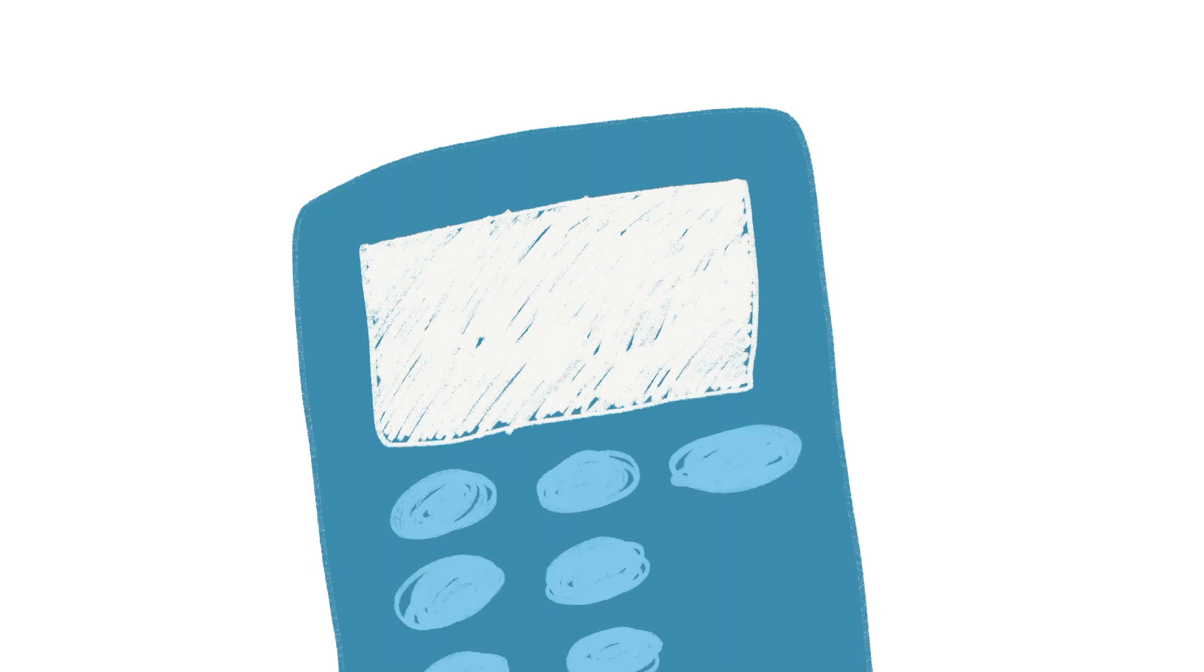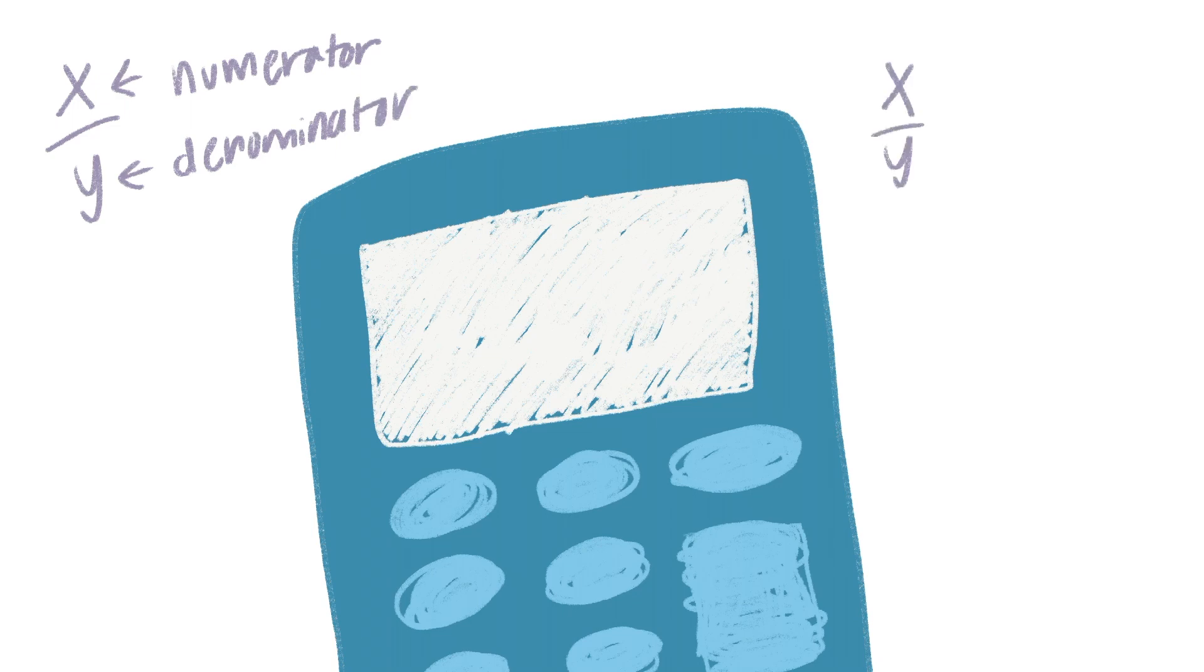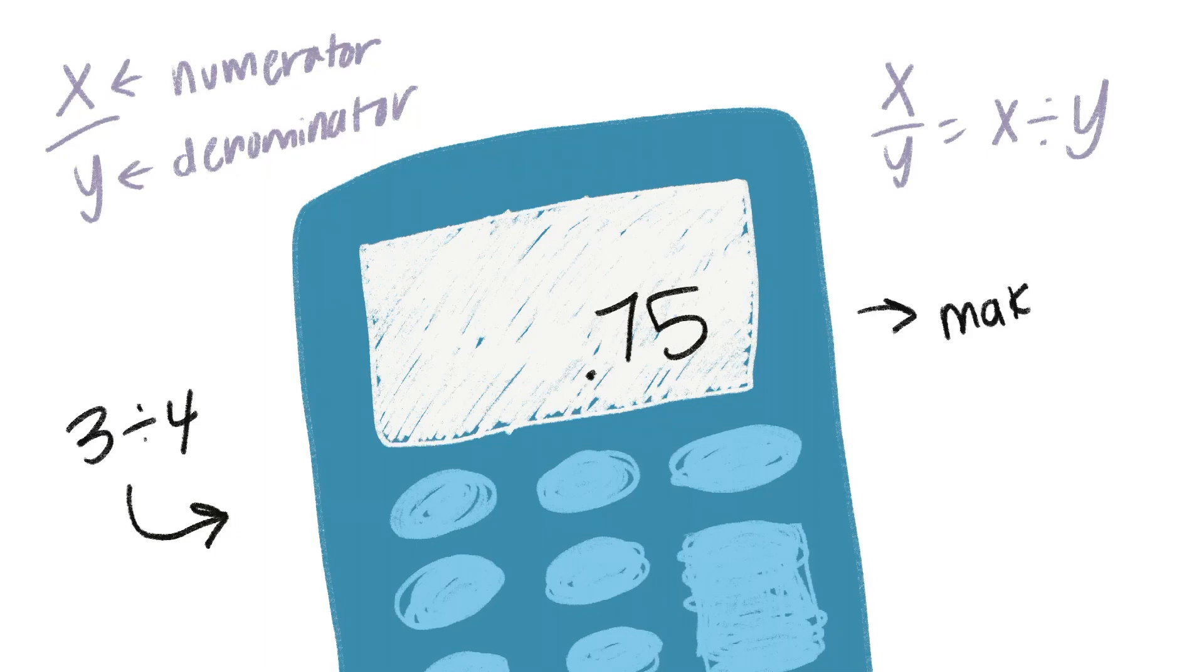The easiest method to convert a fraction to a decimal is using a calculator. Any fraction represents division since you divide the numerator by the denominator. Take 3 over 4, for example. When you input 3 divided by 4 in your calculator, you get 0.75 as your answer, which makes sense because 3/4 is equivalent to 75 hundredths.